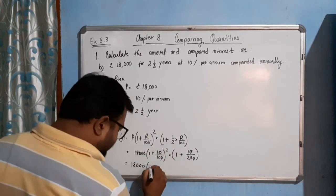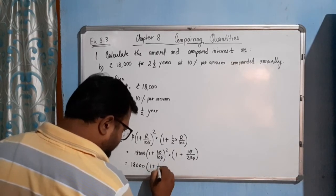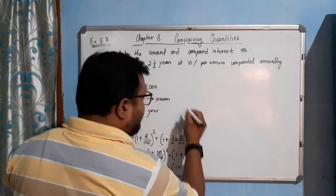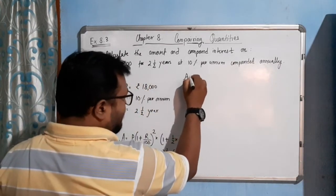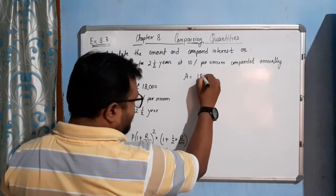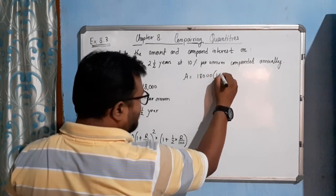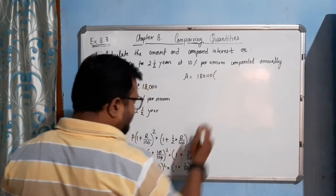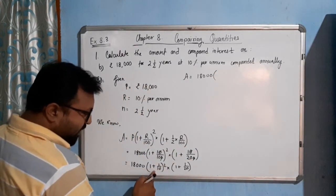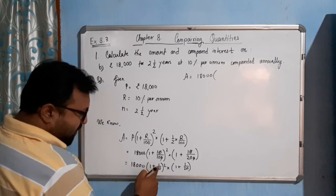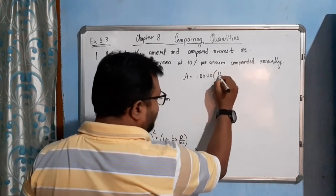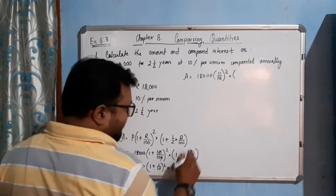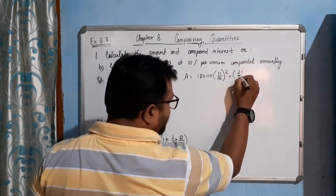10 plus 1 equals 11. It will look like 11 by 10 whole squared into 1 plus 1 by 20. If we take LCM, 10 will be the denominator, 10 plus 1 equals 11 by 10. So we will write 11 by 10 whole squared into, same way, 20 plus 1 equals 21 by 20.